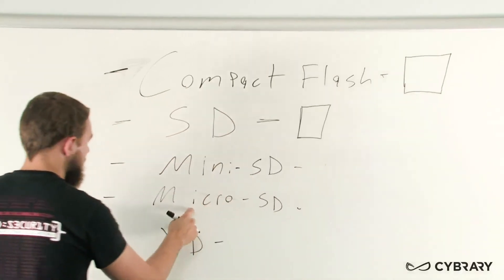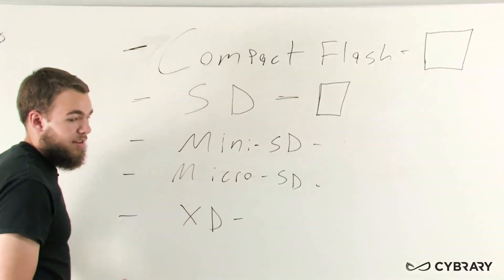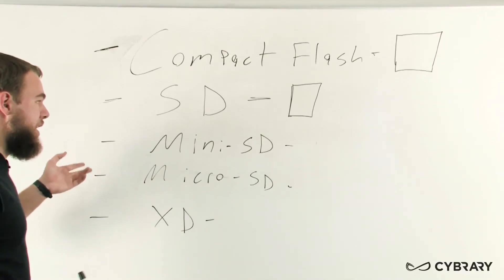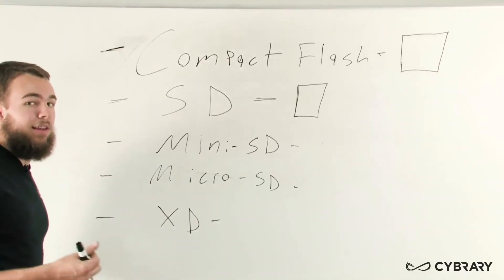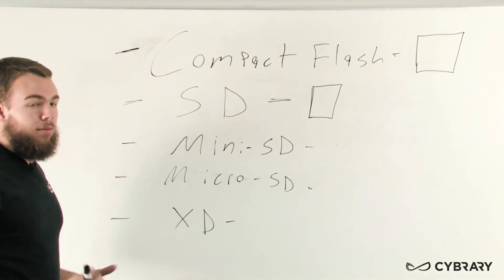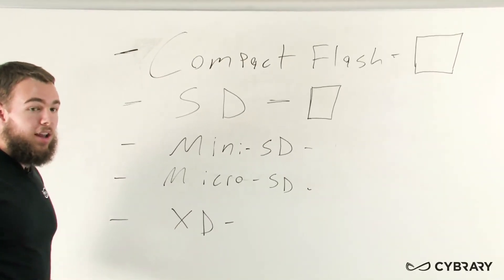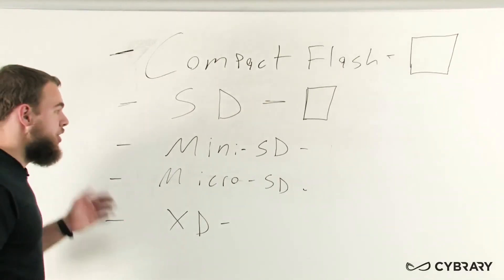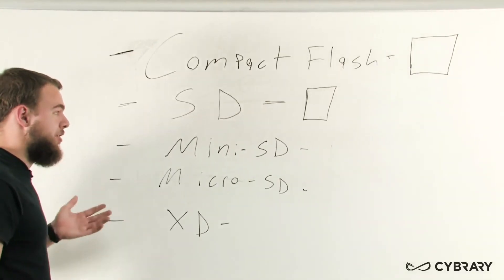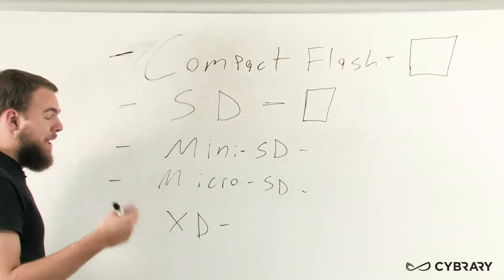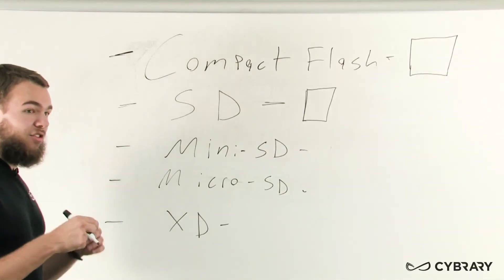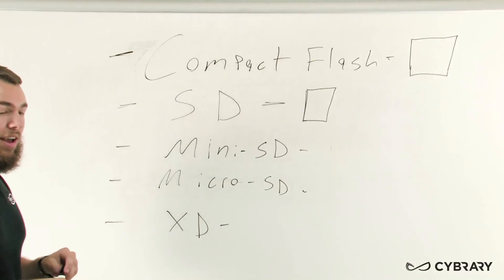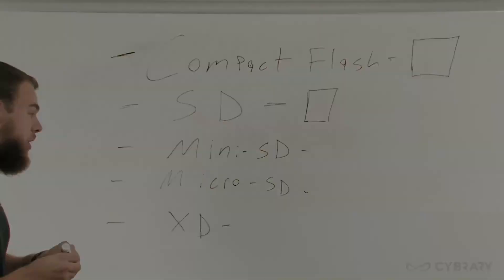Mini and micro SD are going to be smaller than the standard SD. You can get adapters for the mini and micro SD to be able to fit into a standard SD slot, which comes in very handy if you only have one slot on your computer that only fits SD. Those adapters allow you to make it look like it's jumped up to regular SD card size, and it'll work in the regular SD port.